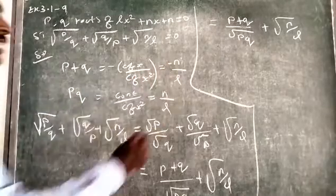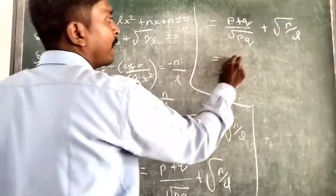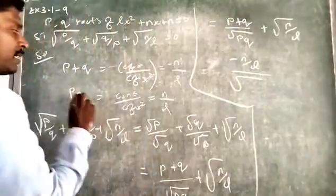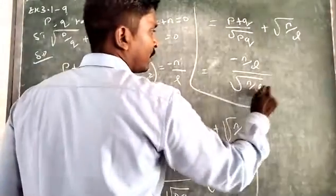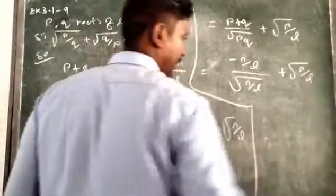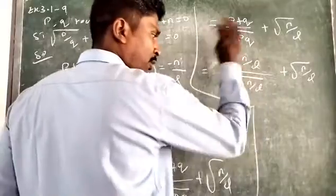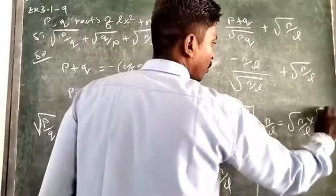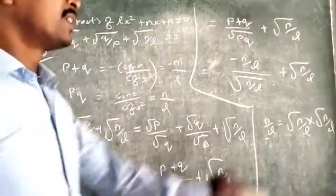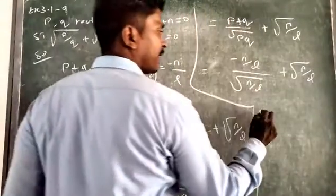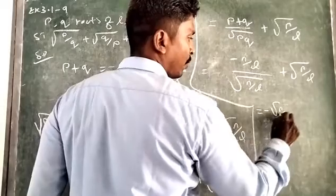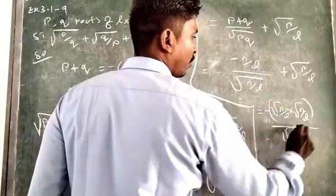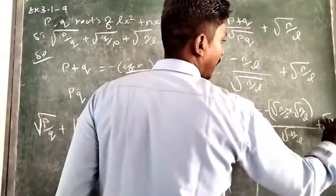We have B plus Q equals minus N by L. So, inside the numerator, substitute this value: minus N by L, divided by the denominator which has the product BQ equal to N by L. Now, plus square root of N by L. If we take the single term root of N by L, we can write the numerator as minus of root N by L into root N by L, divided by root N by L plus root N by L.